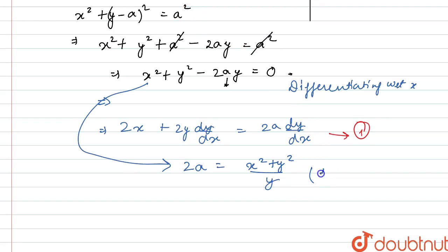What I will do is put this value in 1. So what this will become is 2x plus 2y dy by dx equals, putting the value of 2ay which is x square plus y square upon y into dy by dx.